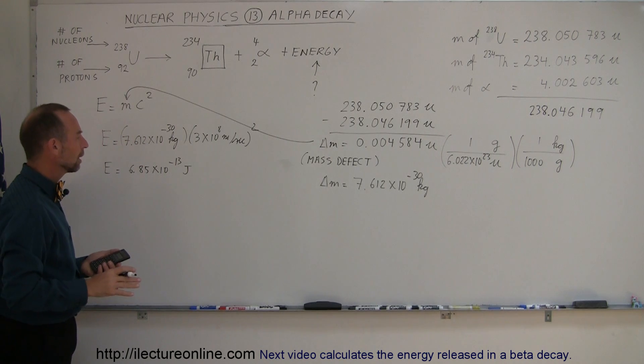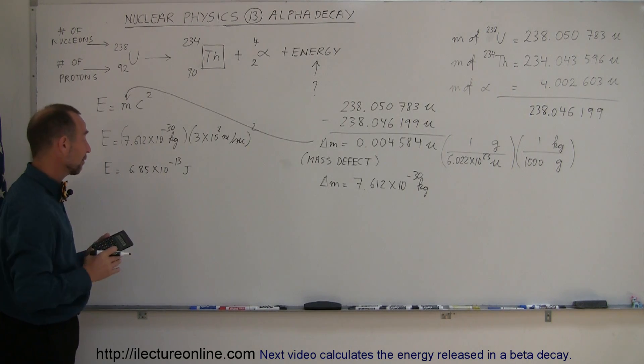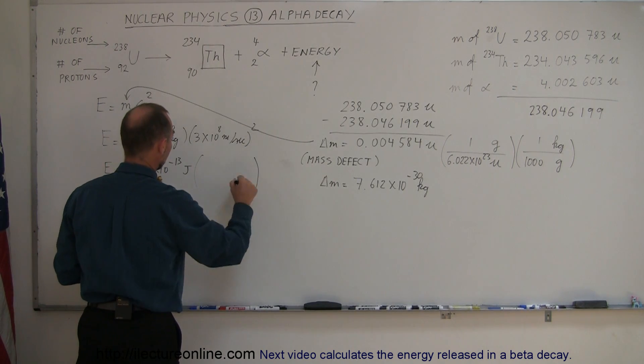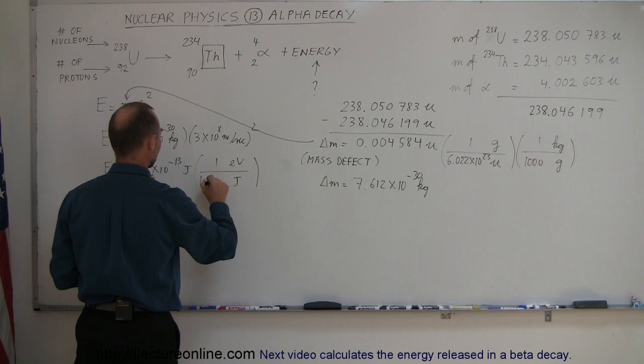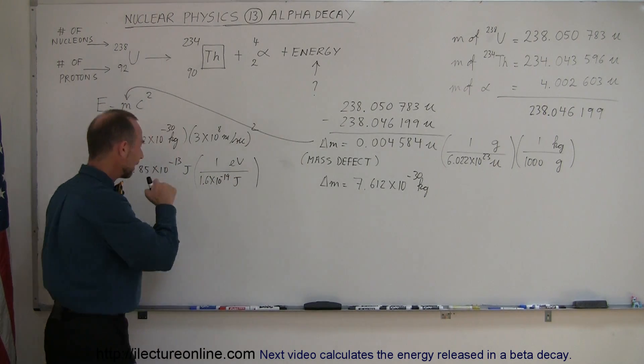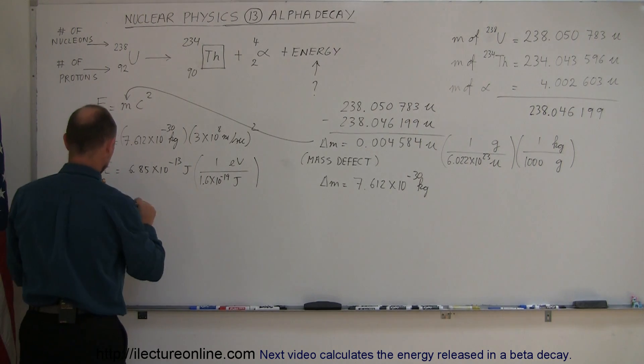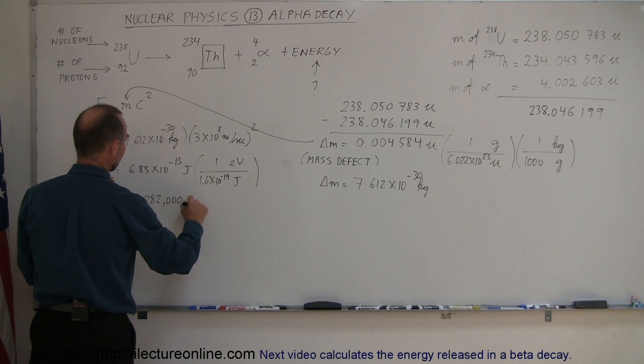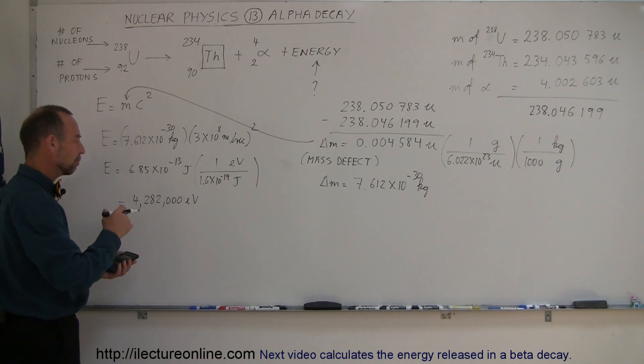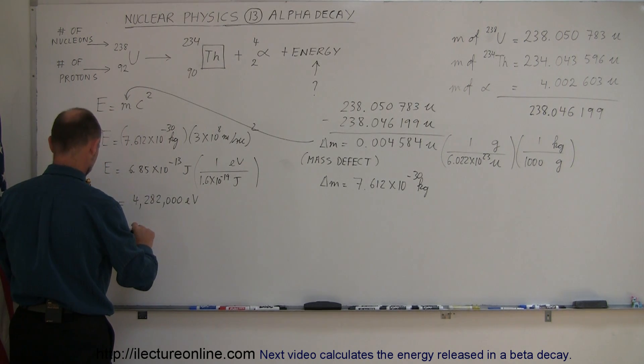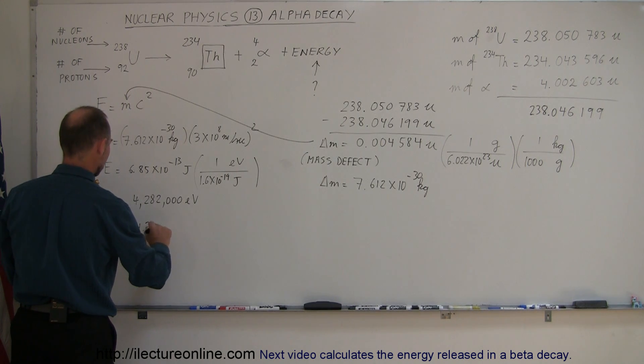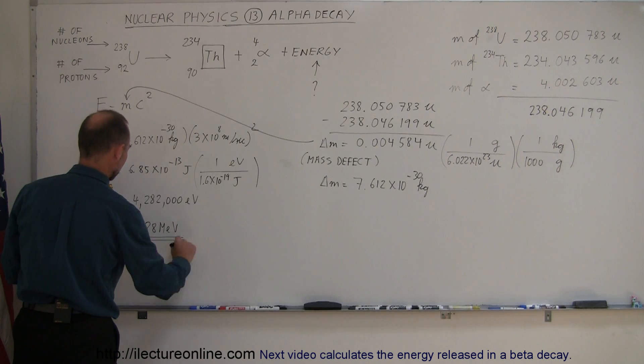Now typically we convert that to electron volts, in particular when we talk about nuclear decay like that, it's typically a million electron volts. So the conversion to electron volts, one electron volt is 1.6 times 10 to the minus 19 joules. So divide that number by 1.6 e to the minus 19, and we get this is equal to 4,282,000 electron volts, and so that's why we usually convert it to a million electron volts, so this is equal to 4.28 MeVs, million electron volts. So that's the energy released by that particular reaction.